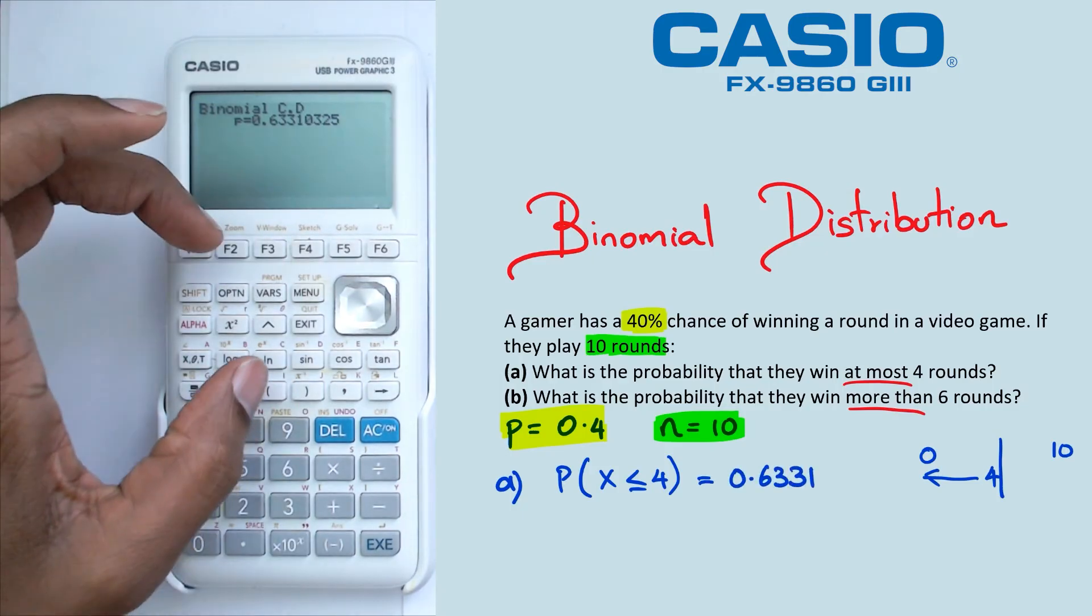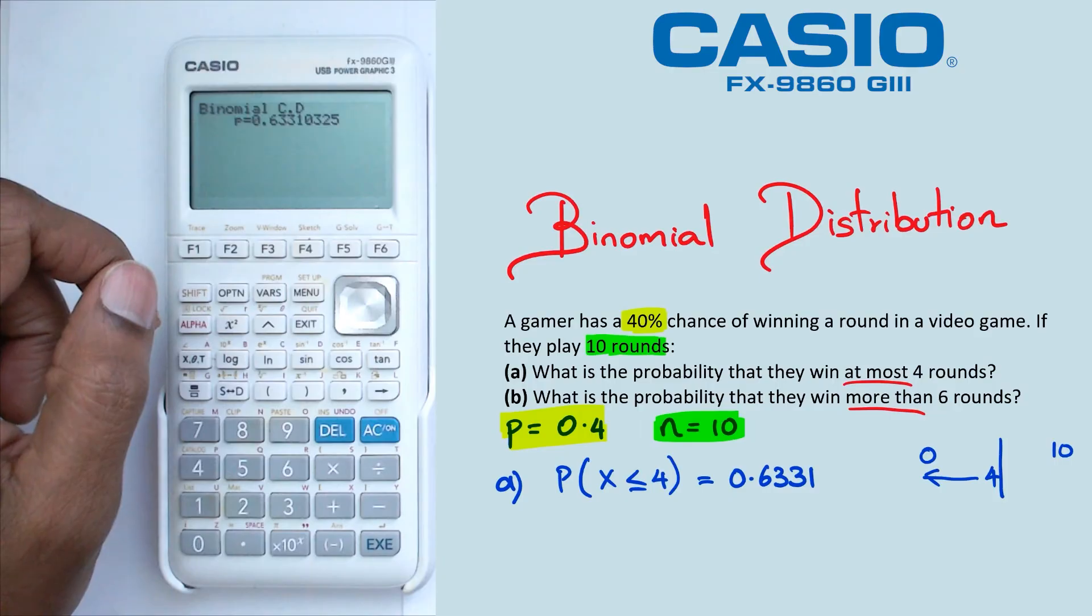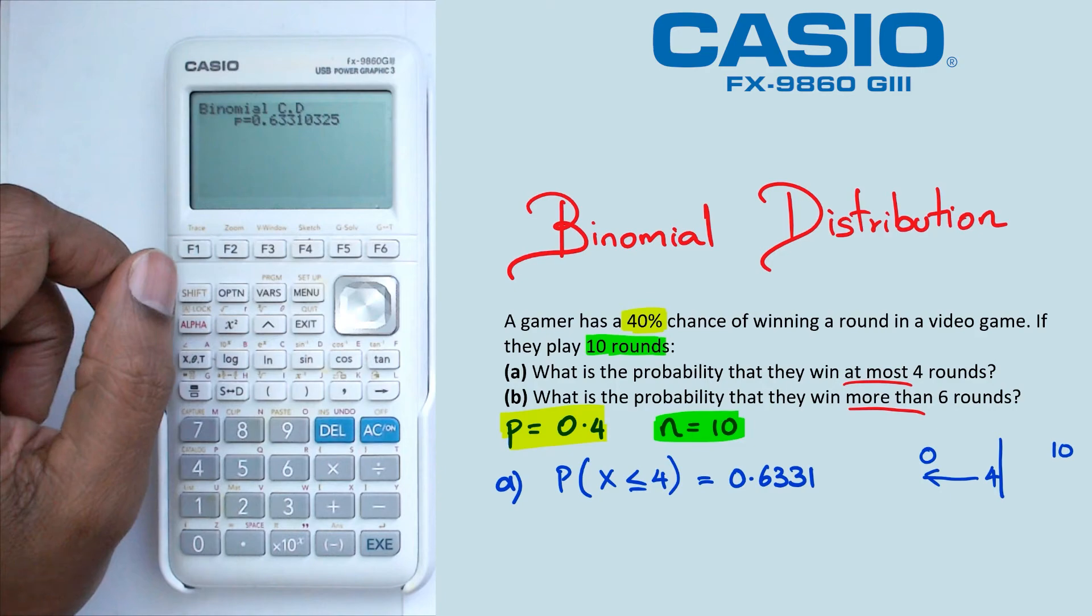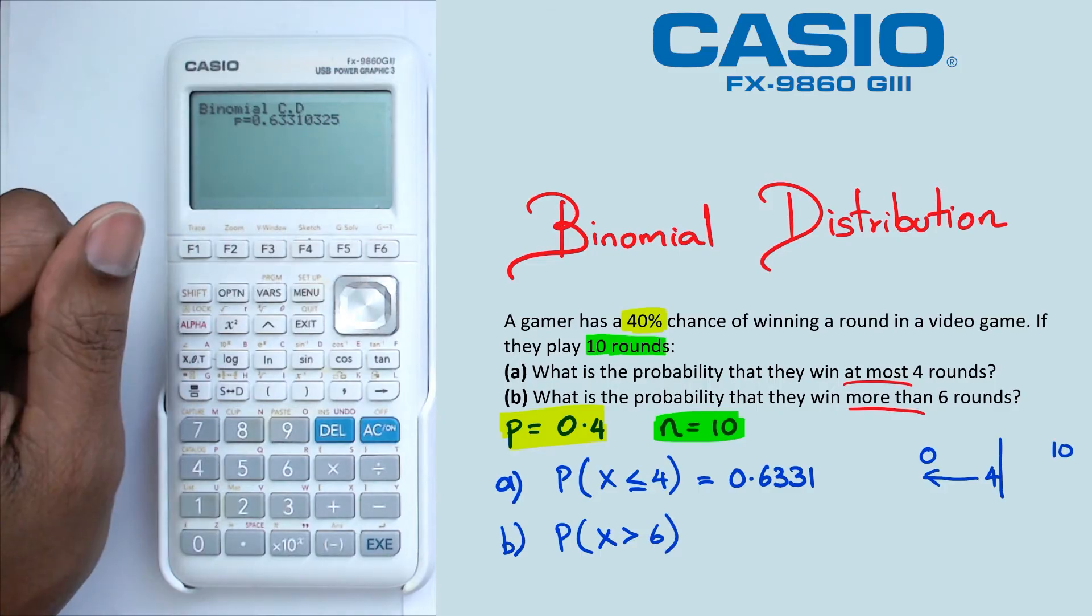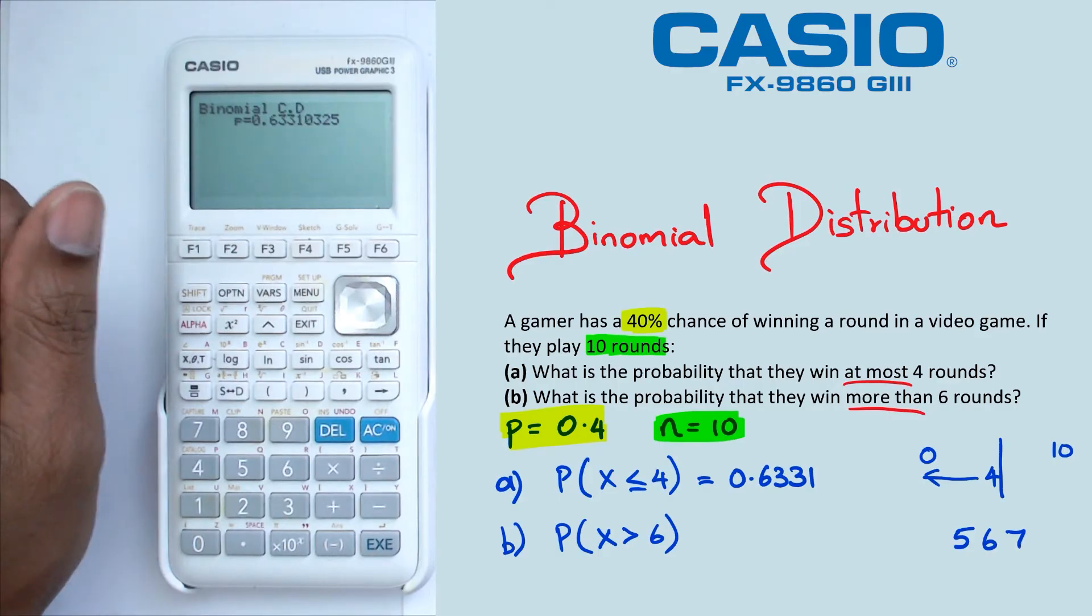Now in the next question, we're looking for probability that they win more than six rounds. So if they want to win more than six rounds, we're looking for probability of X greater than six. And if I was to write these numbers down, I'm just going to write down five, six, and seven. So we're looking for more than six. That means we're going to be looking for the probability of winning seven, eight, nine, 10.